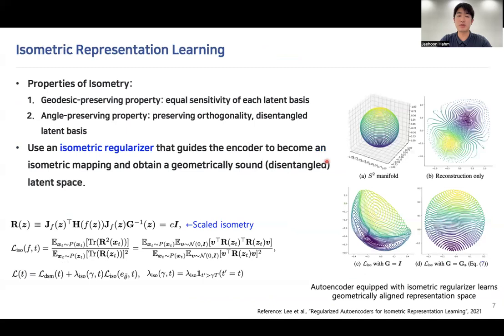In this work, we used two important properties of isometry. First, geodesic-preserving property, which induces equal sensitivity of each latent basis. Second is angle-preserving property, which induces preserving orthogonality, hence achieving disentangled latent basis. By using an isometric regularizer, we guide the encoder to become an isometric mapping and obtain a geometrically sound or disentangled latent space.